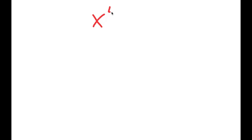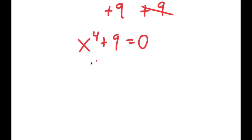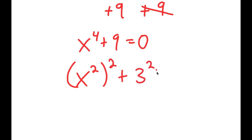For this video, I'm going to be solving the equation x to the power of 4 is equal to negative 9. What I'm first going to do is add 9 on both sides, so these two cancel out, and I get x to the power of 4 plus 9 is equal to 0. From here, I can rewrite x to the power of 4 as x squared to the power of 2, and I can rewrite 9 as 3 squared.